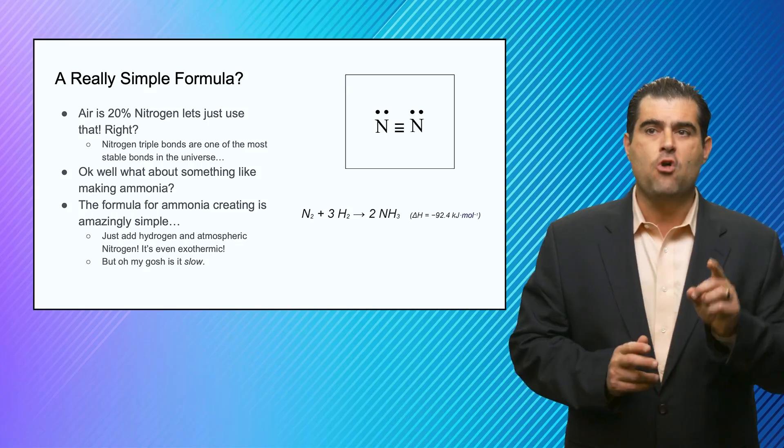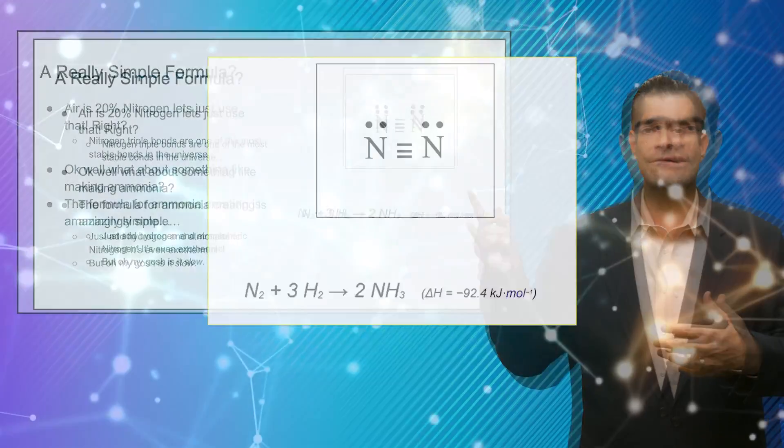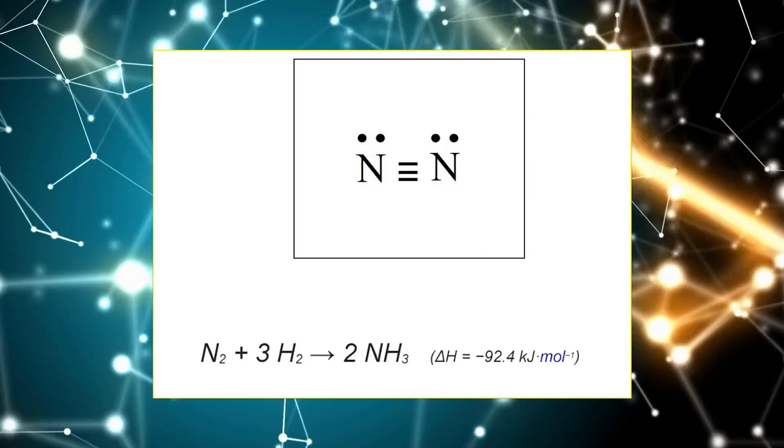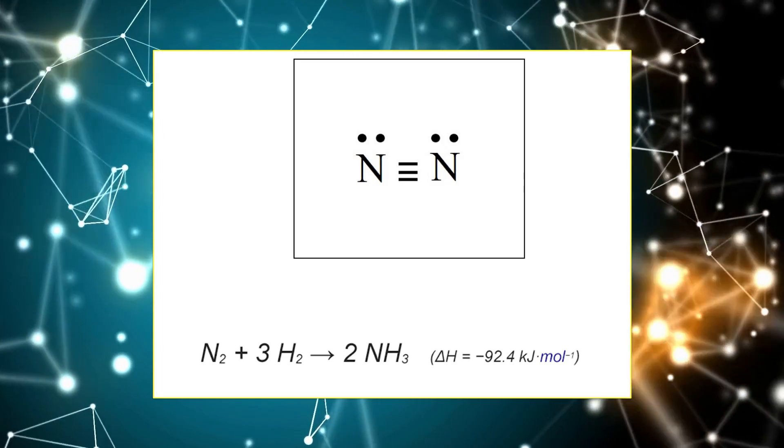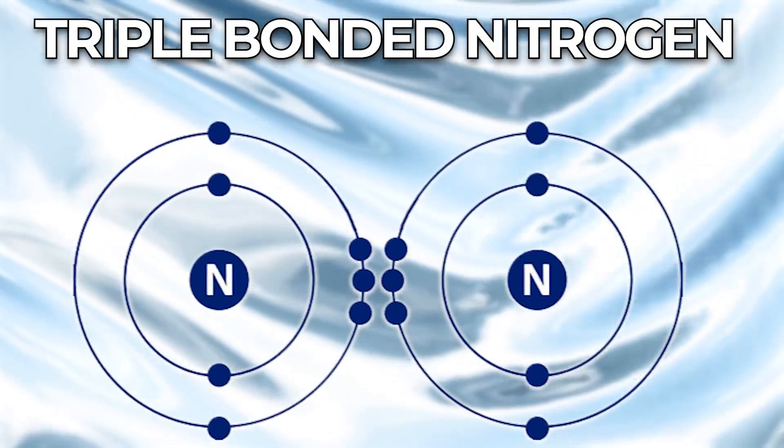Now air is 20% nitrogen. Let's just use that, right? No. No! Nitrogen triple bonds, as illustrated in this chemical equation here, is incredibly stable and very difficult to break into just single nitrogen atoms. Atomic nitrogen. What about making ammonia?